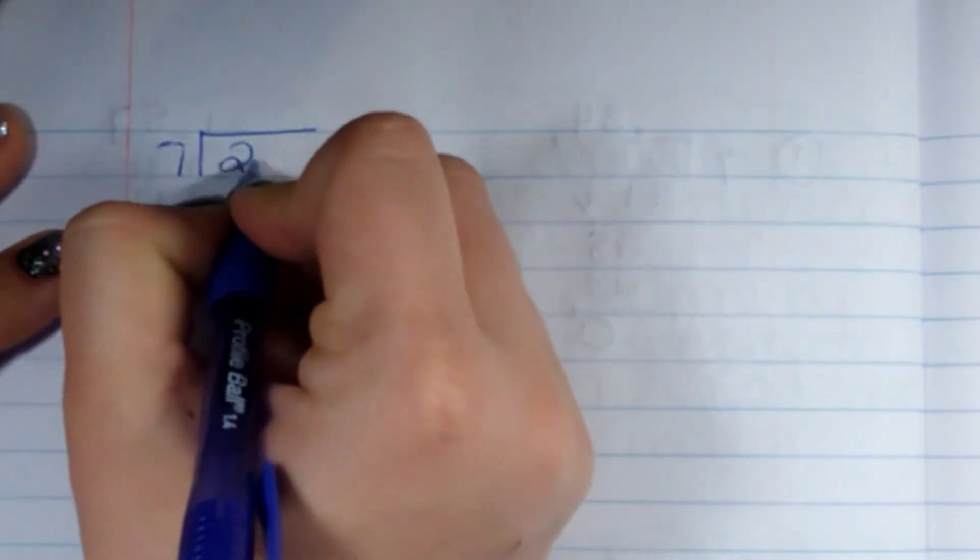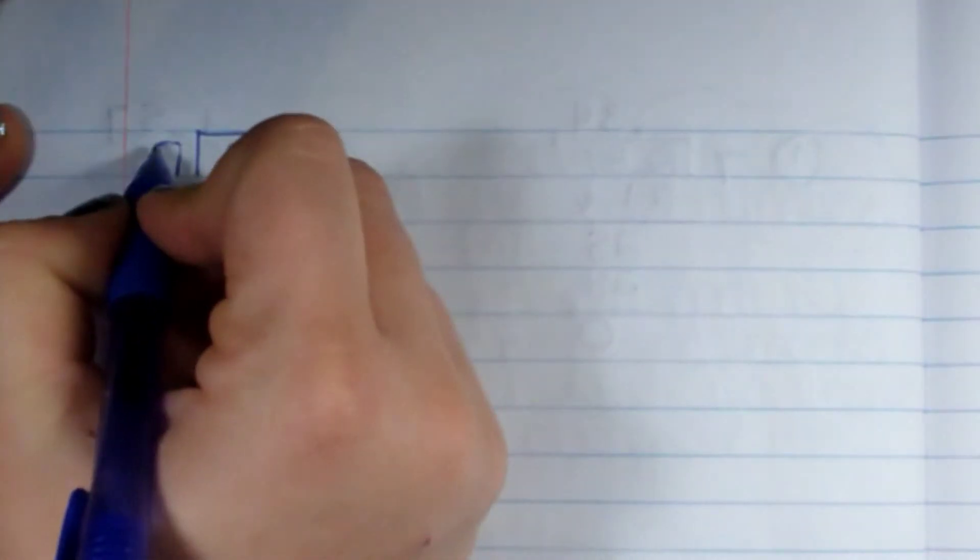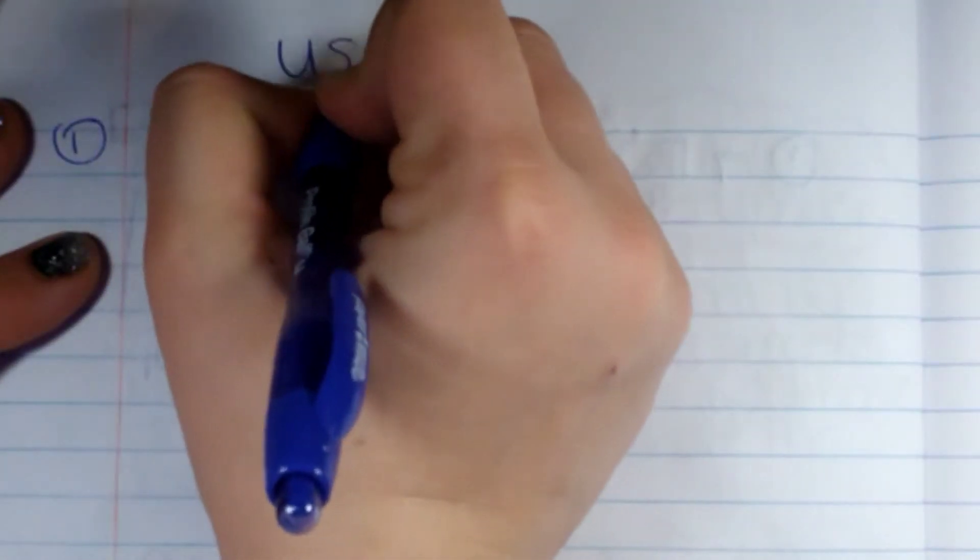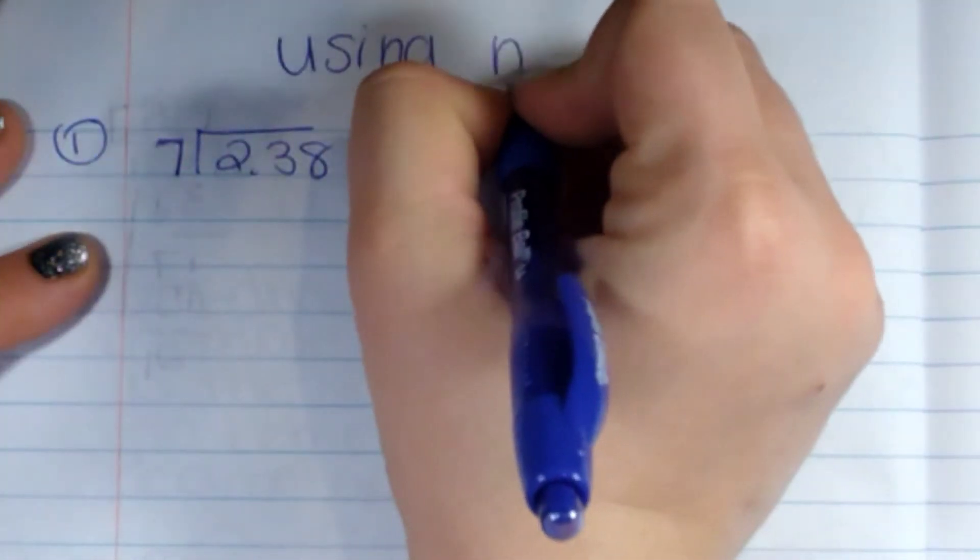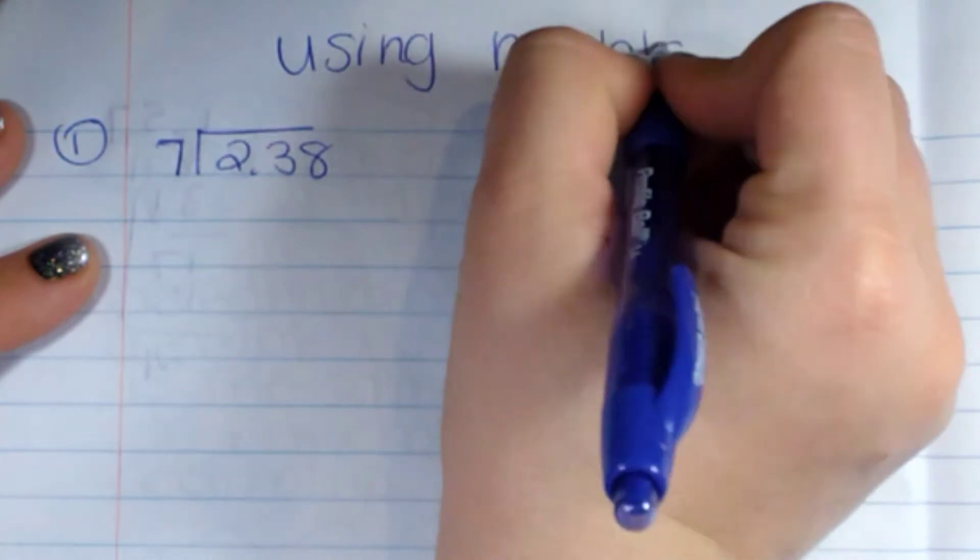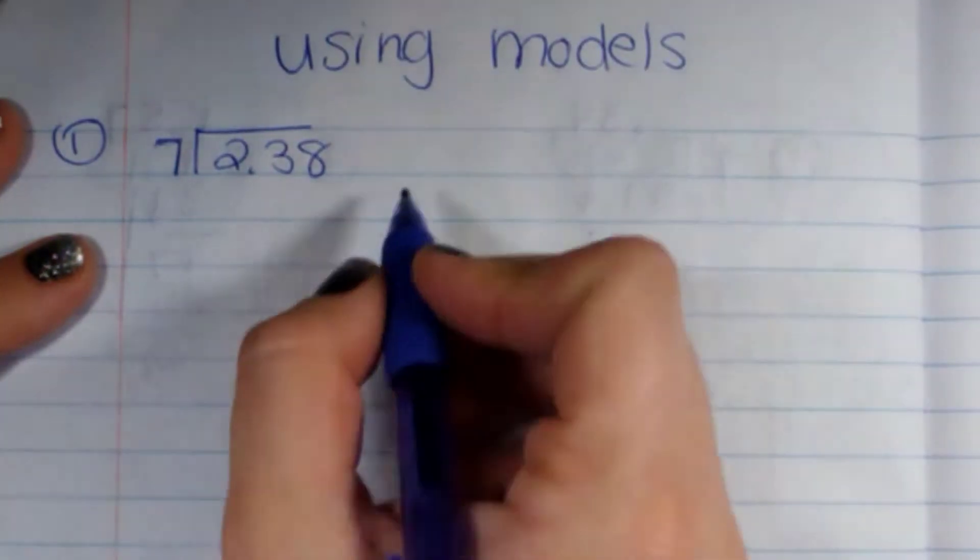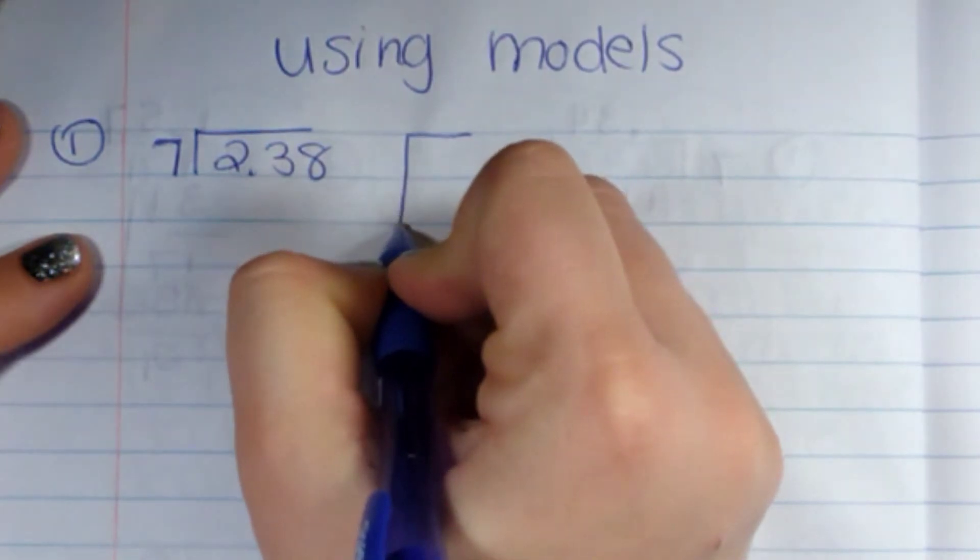I'm going to start with seven into two and thirty-eight hundredths. I'm using models up here. If we were to be drawing this, we would be drawing two